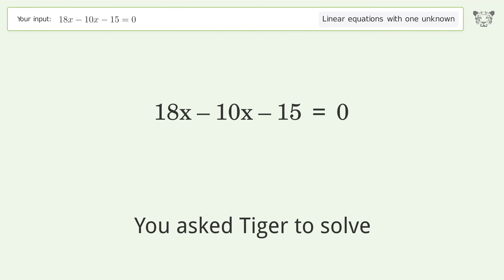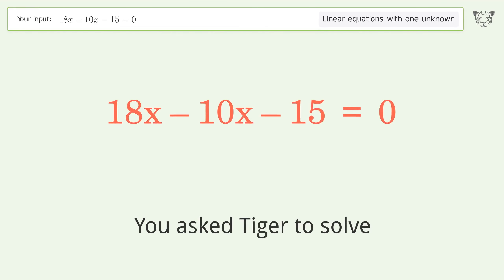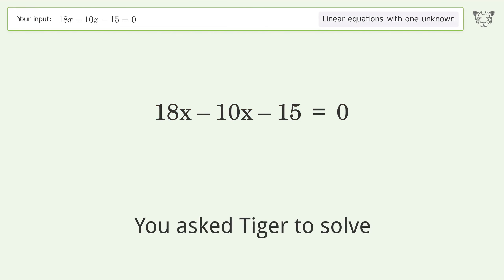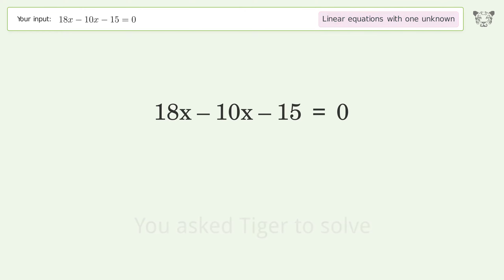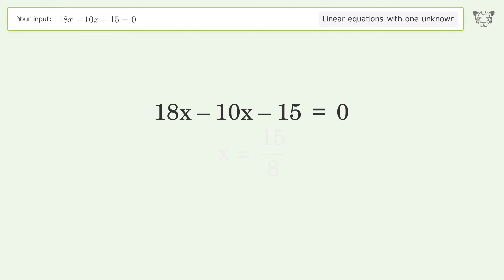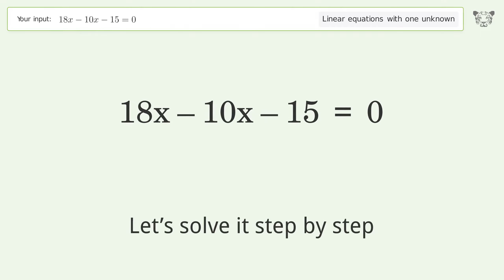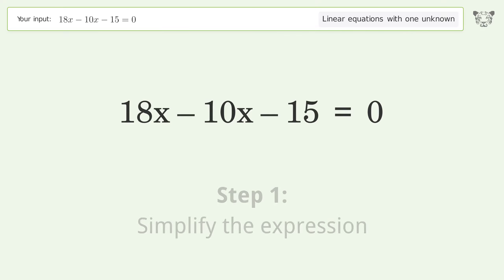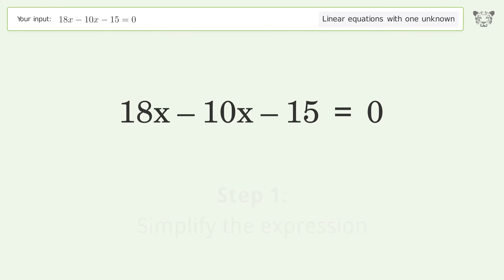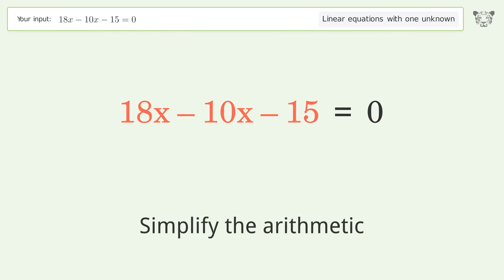Tiger Algebra solves this linear equation with one unknown. The final result is x equals 15 over 8. Let's solve it step by step: simplify the expression and simplify the arithmetic.